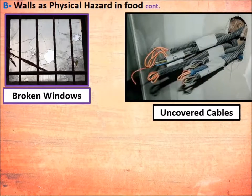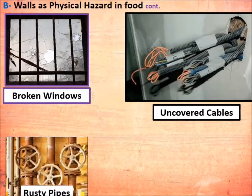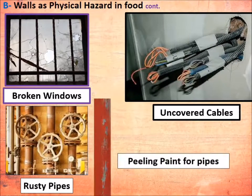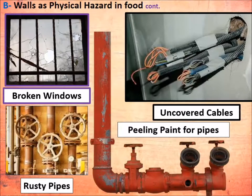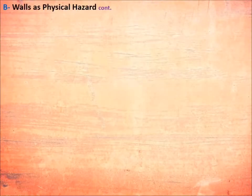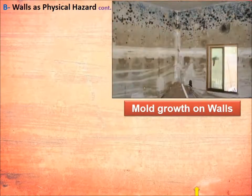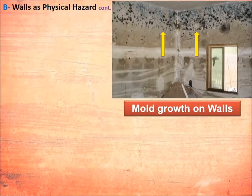Additional wall hazards include broken windows, uncovered electricity cables, rusty pipes, and peeling paint on pipes. Mold growth on walls is also another factor.